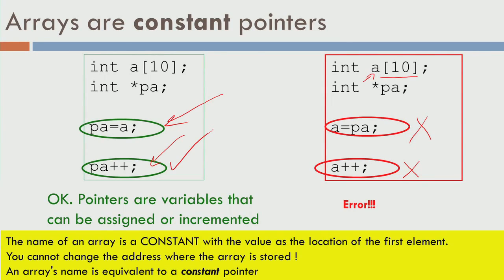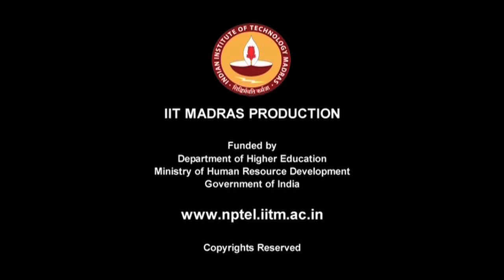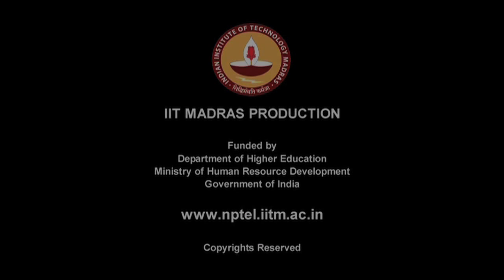To summarize: a cannot appear on the left side of any expression or manipulation. a plus plus is just a equals a plus 1, which is not allowed. Whereas pa, being a variable, can appear freely on the left side. The variable a is called a constant pointer — int a of 10 represents 10 locations, and a points to a[0] and cannot point at anything else. That is what is meant by constant pointer: a can point at a[0] and nothing else.